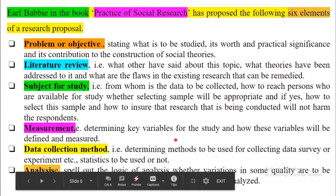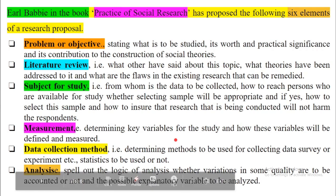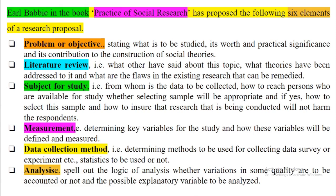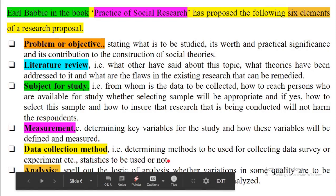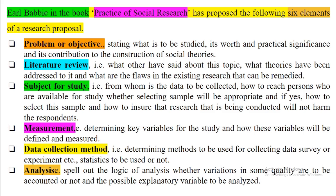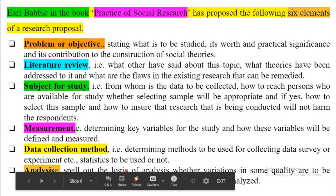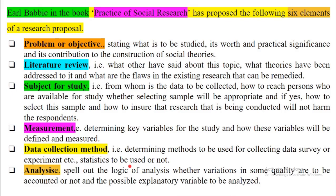Fourth, measurement: determining key variables for the study and how these variables will be defined and measured. You identify the variables — the questions to be answered — and determine data collection methods. Fifth, determining methods to be used for collecting data, such as survey or experiment, and whether statistics will be used — meaning what tools or techniques you will apply, whether data is in text or statistical form. Sixth, analysis: spelling out the logic of analysis, whether variations in qualities are to be accounted for, and the possible explanatory variables to be analyzed.